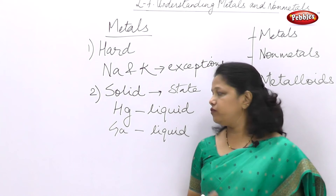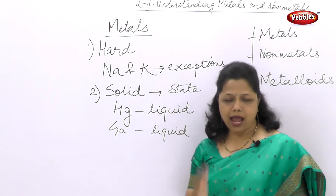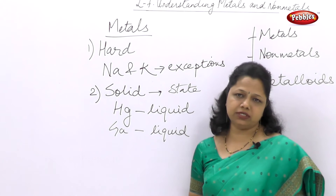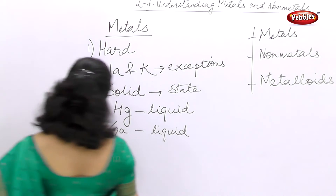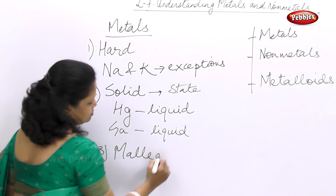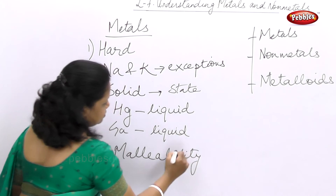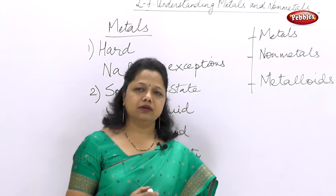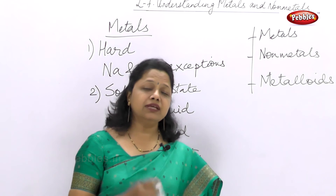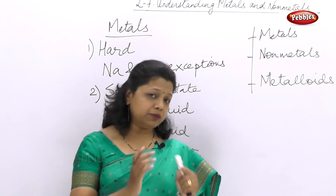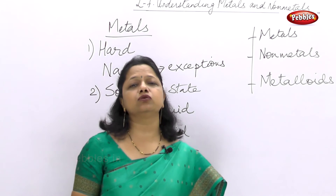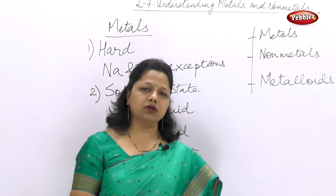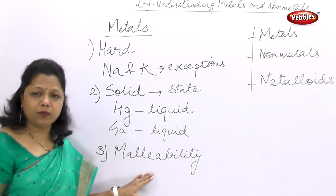The third property is whether metals can be hammered or beaten into sheets. Yes, metals can be hammered or beaten into sheets, and this property is called malleability. We can see this with aluminium foils at home — aluminium has been hammered and changed into a sheet. Many copper sheets, aluminium sheets, and iron sheets are used in industries, just because metals have the property of malleability.